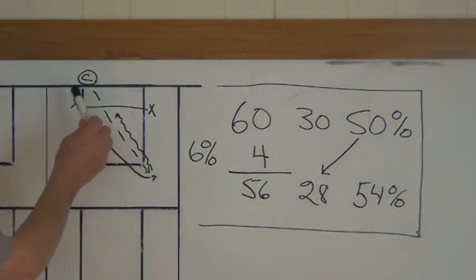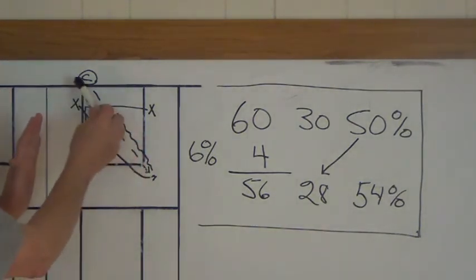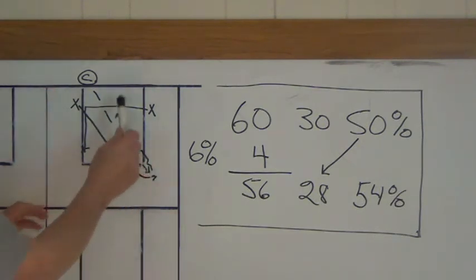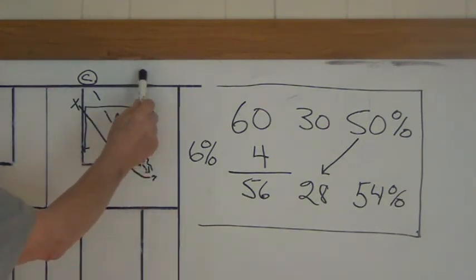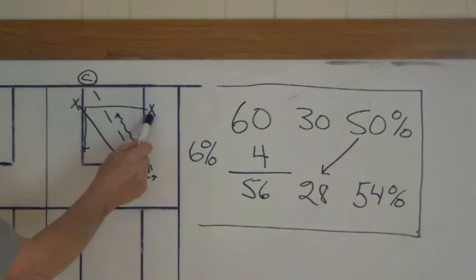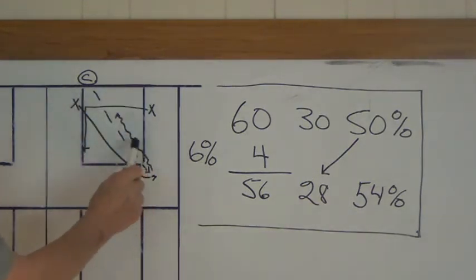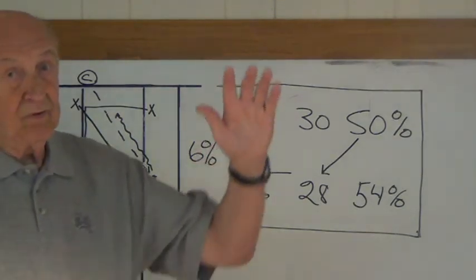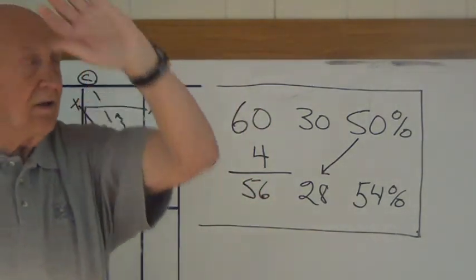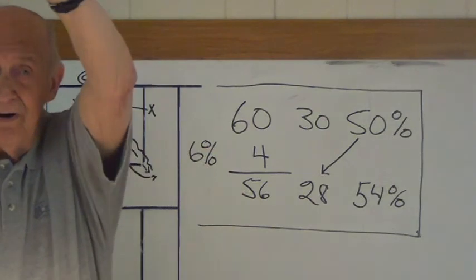But after you've done it on this side for a while, then move the coach over here. Now everything is just the opposite. He's the guy going to the elbow. He's the guy going up. Now you have a different arm. You're going to be blocking, in this case, with your left arm.